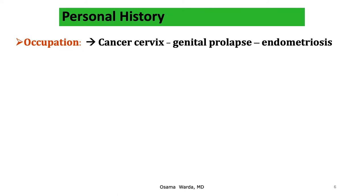Personal history should include the occupation of the patient, as some diseases may be linked to certain occupations. For example, cervical cancer is more common in patients with multiple sex partners. Genital prolapse is common in patients lifting weights or with chronic increased intra-abdominal pressure, such as asthmatic patients or those working in textile factories.